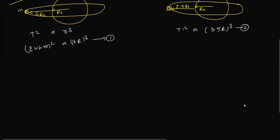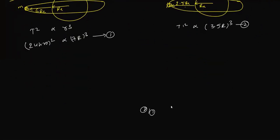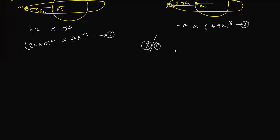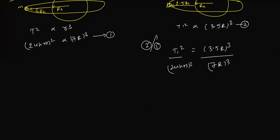Dividing equation 2 by equation 1: T'² / (24 hours)² = (3.5R)³ / (7R)³. The R cancels out. We get (3.5/7)³ = (1/2)³ = 1/8. Therefore T'² = (24)² / 8.